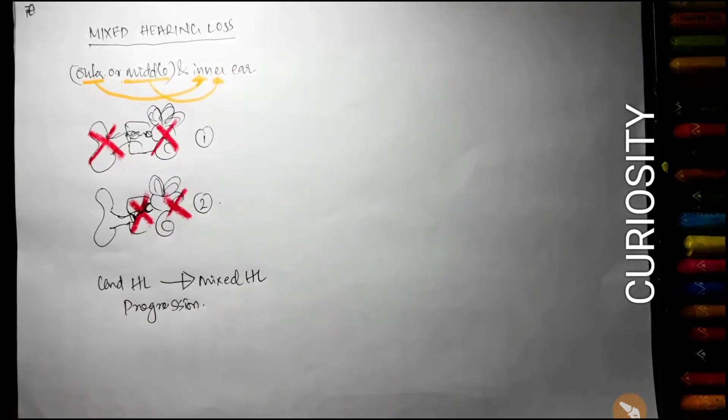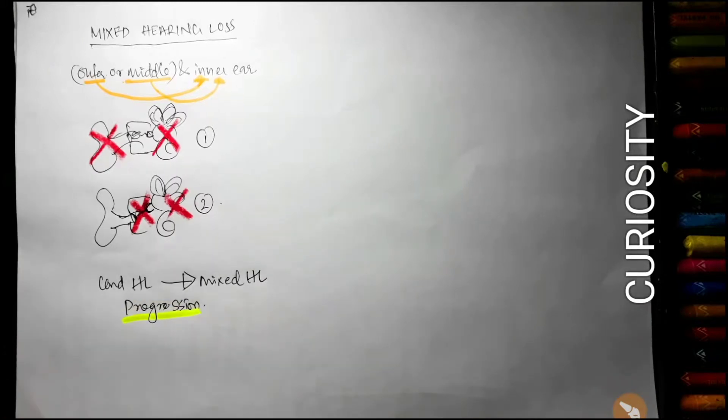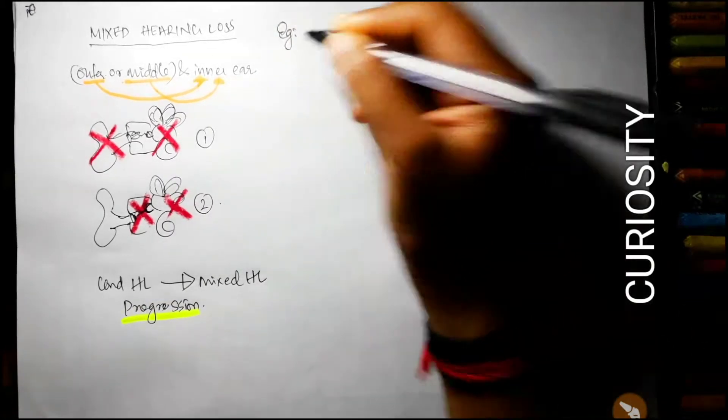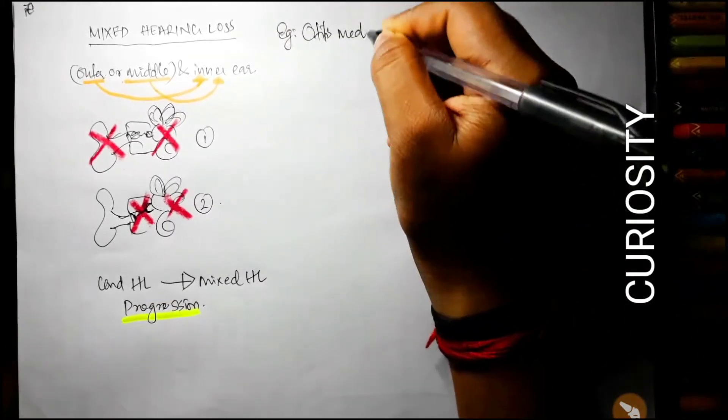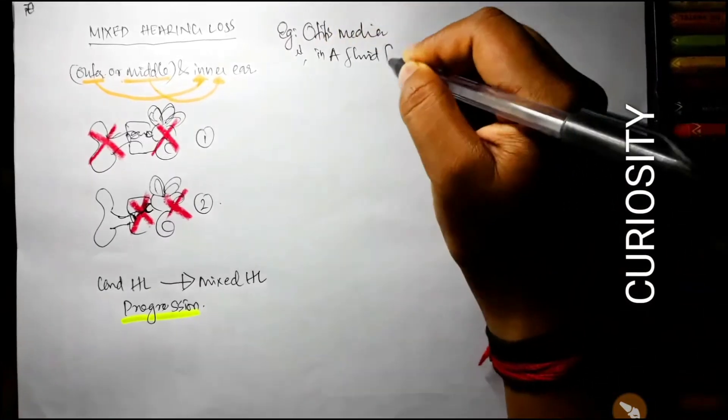Conductive hearing loss can progress to mixed hearing loss. This progression takes some time. It progresses with time.